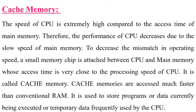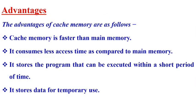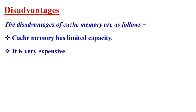Cache memory is the last type of memory we'll discuss. The speed of the CPU is extremely high compared to the access time of main memory, so CPU performance decreases due to the slow speed of main memory. To decrease this mismatch in operating speed, a small memory chip is attached between the CPU and main memory whose access time is very close to the processing speed of the CPU — this is called cache memory. Cache memory is accessed much faster than conventional RAM and is used to store programs or data currently being executed or frequently used by the CPU. Cache memory makes the main memory appear faster and larger than it really is. It is very expensive, so its size is normally kept small. Advantages: faster than main memory, less access time, stores frequently used programs and temporary data. Disadvantages: limited capacity and very expensive.